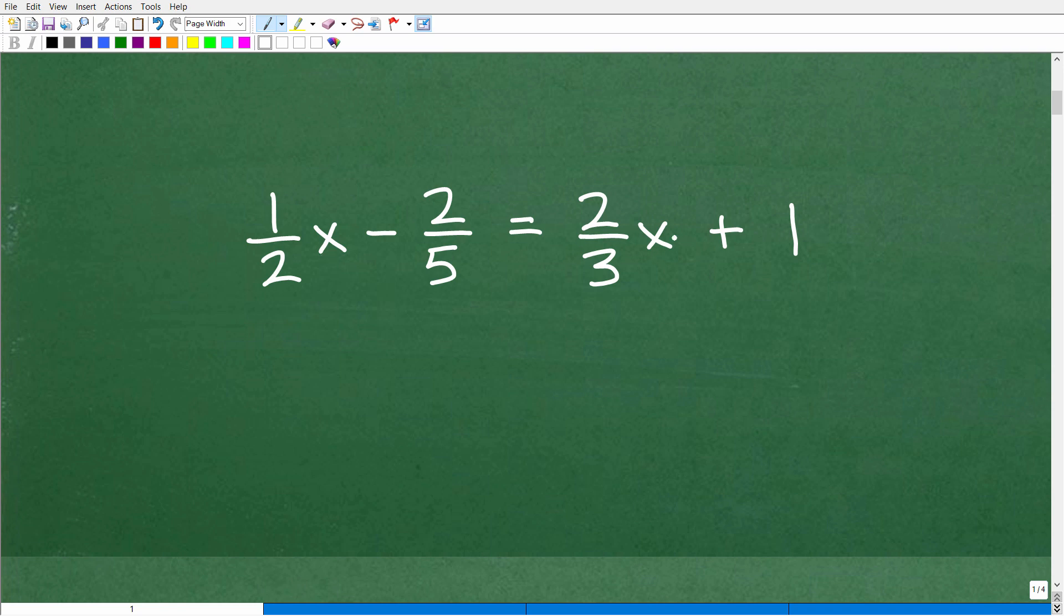So we have x, we want to solve this equation for x, but we're dealing with a fraction, another fraction, but this, of course, is a number. And then here we have another variable term with our variable, two-thirds, obviously, it's a fraction, x, and then we have a number.